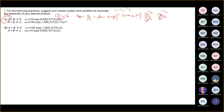So this is the equation. So now, is CA greater than CB? Yeah. So CA is greater than CB.